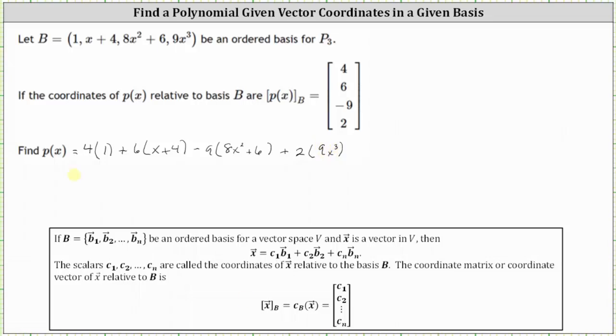And now we need to simplify. We have 4 plus 6x plus 24 minus 72x squared minus 54 plus 18x cubed.